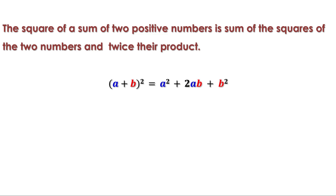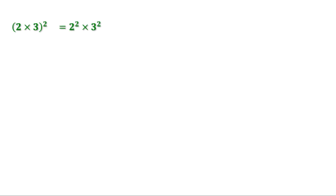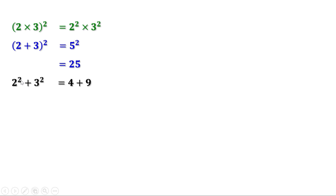We know the square of a product is the product of the squares. For example, (2 × 3)² = 2² × 3². We know 2 × 3 = 6, and 6² = 36; also 2² = 4, 3² = 9, and 4 × 9 = 36. But what about (2 + 3)²? That is 5² = 25. And 2² + 3² = 4 + 9 = 13. These are not equal, so (2 + 3)² ≠ 2² + 3².